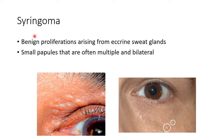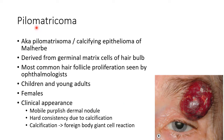Hello guys, this is Indian Medico. In this video we are going to discuss about benign adnexal tumors of the eyelid. First, let us discuss about syringoma. These are benign proliferations arising from eccrine sweat glands. They present as small papules that are often multiple and bilateral, as you can see in these pictures.